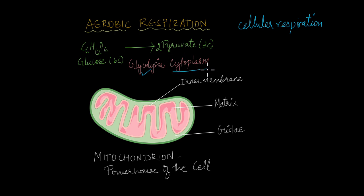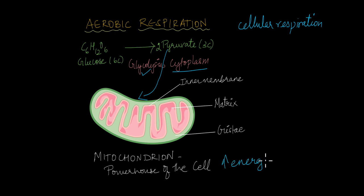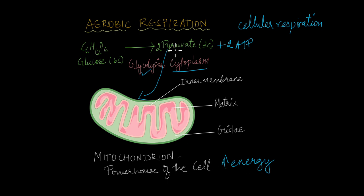In aerobic respiration, pyruvate doesn't just stay in the cytoplasm. It is moved to the mitochondria, which is rightly termed the powerhouse of the cell, because this is where the maximum amount of energy is produced. Glycolysis yields a little energy, but the maximum amount of ATP is produced in the mitochondria.